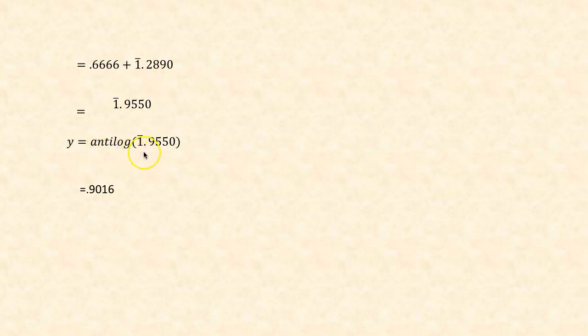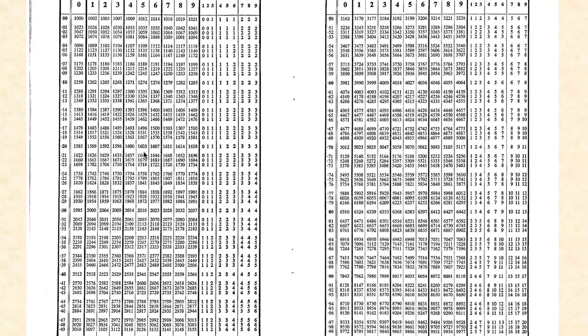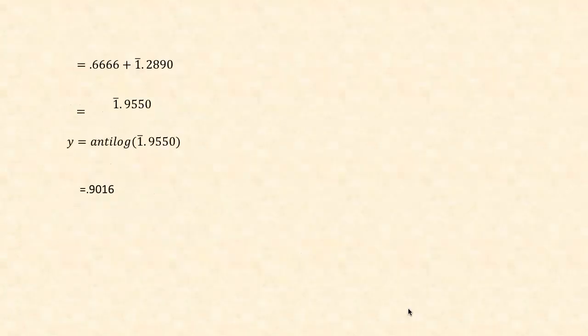We need to calculate y = antilog of bar 1.9550. Going to the antilog table, we look at 0.95 under column 5, which gives 9016. Since the characteristic is bar 1, we write the answer as 0.9016.